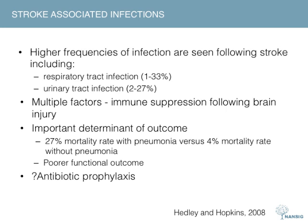Levels of infections such as respiratory tract and urinary tract infections are higher in stroke patients than in other hospital patients. The cause is likely multifactorial, including immune suppression following brain injury. This increased rate of infection is important due to its relationship with stroke outcome: stroke patients with pneumonia have a mortality rate of 27%, compared with 4% in stroke patients without pneumonia. Survivors of stroke-related pneumonia show significantly decreased functional ability. Prophylactic antibiotic treatment has been researched but evidence is unclear, so it is not included in NICE guidance; however, antibiotic treatment for established infections is indicated.